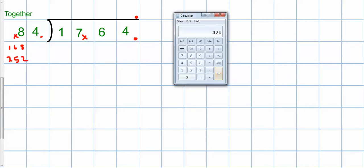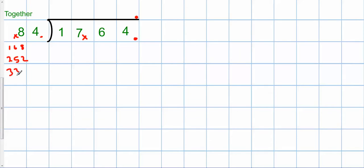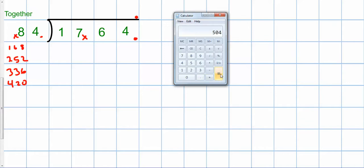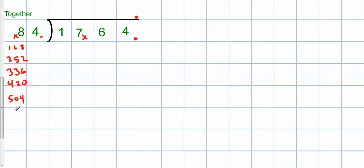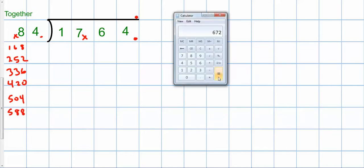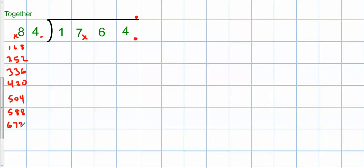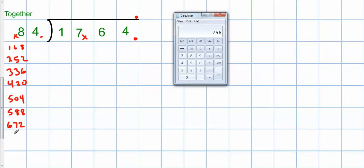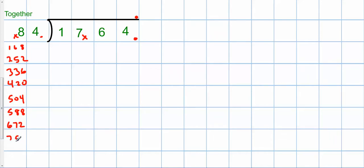So you notice I'm hitting, just hitting the equal sign. 336, 420. So 336, 420. 504, 588. 672. 756. And I'm going to guess that's the last one.